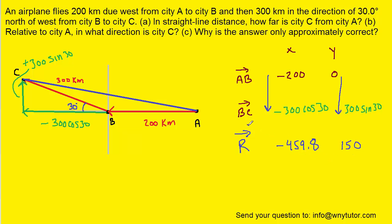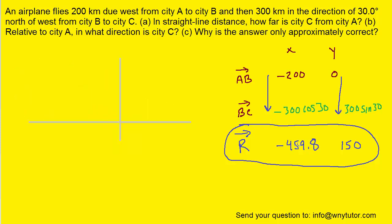What I prefer to do with my resultant x and y components is to draw a new triangle. We have a negative x component, so starting at the origin we will move along the negative x direction and draw a straight line. Then we have a positive y component, so we're going to go straight up. Then we label the magnitudes of those two components: the x component had a magnitude of 459.8 and the y component had a magnitude of 150.